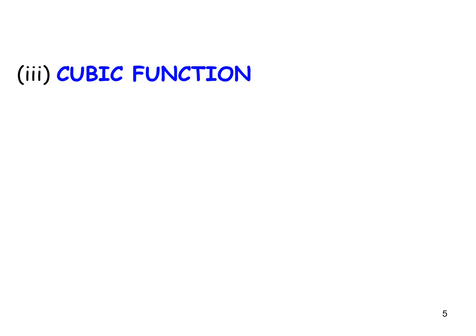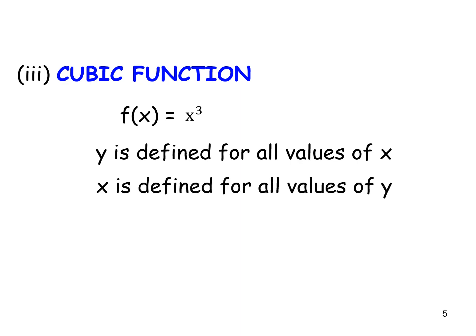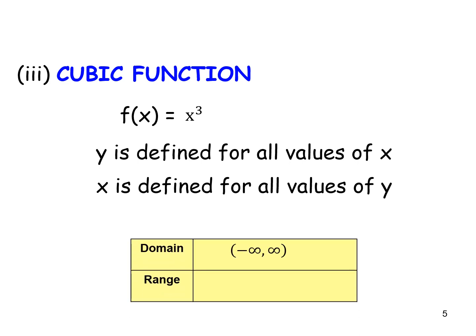For a cubic function f(x) = x³, y is defined for all values of x, and x is defined for all values of y. So we can say the domain is always all real numbers and the range is always all real numbers, negative infinity to infinity.